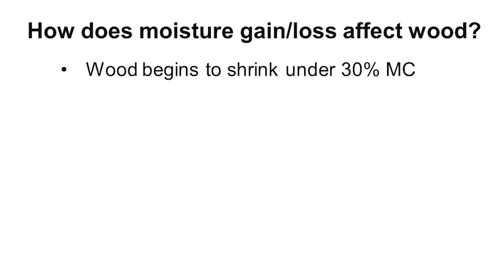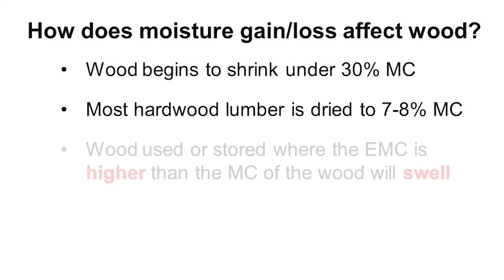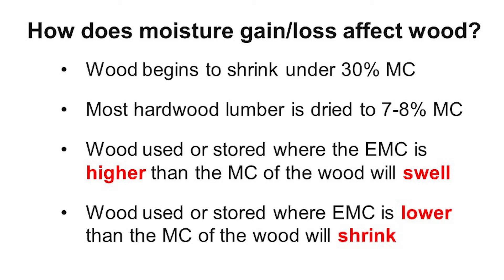Wood begins to shrink as its moisture content starts to get below about 30%. Most hardwood lumber is dried to around 7% to 8% moisture content and most of the shrinkage has already taken place. Wood used or stored where the EMC is higher than the moisture content of the wood will swell. If the EMC is too high, the swelling could cause joints to fail or warp in the product that's made from the wood. The same thing can happen in reverse — if wood is brought into a much drier environment and loses enough moisture, the shrinkage could cause warp or joint failure in the product.